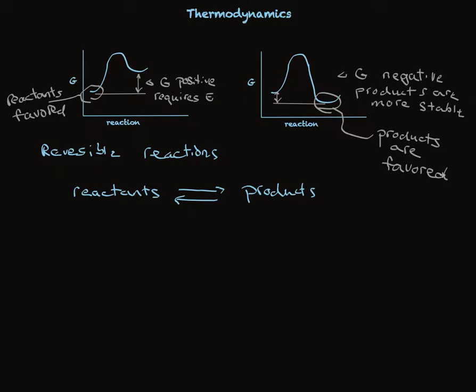When we're thinking about thermodynamics, look at the energetics of the reactants and the products. We'll notice that for irreversible reactions, the difference between those two will simply tell us whether we have to put more energy in or get energy out. For reversible reactions, that delta G value will tell us whether the reactants or the products are favored.